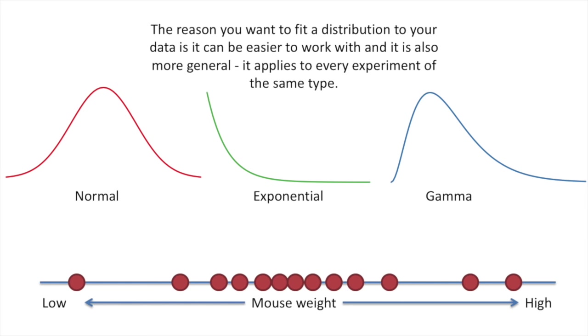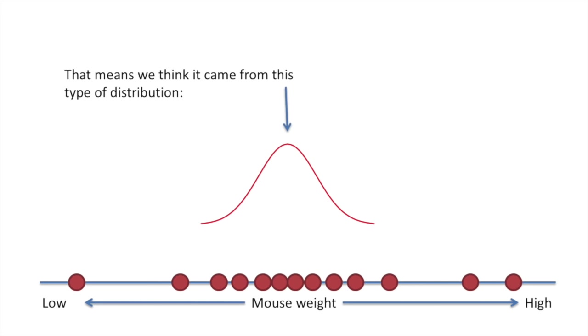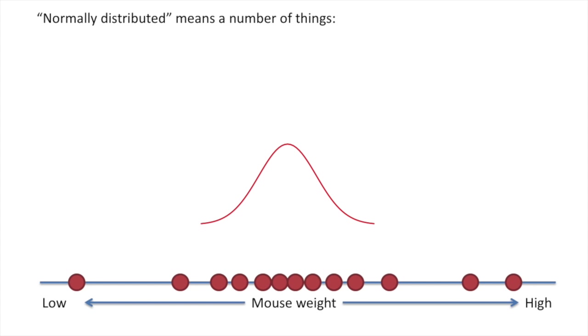The reason you want to fit a distribution to your data is it can be easier to work with and it is also more general. It applies to every experiment of the same type. In this case, we think the weights might be normally distributed. That means we think it came from this type of distribution.